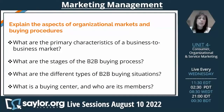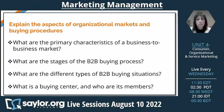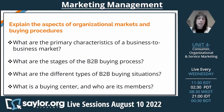Moving on to the second learning outcome for Unit 4, we're going to explain the aspects of organizational markets and buying procedures and look at the characteristics of a B2B — business-to-business — marketplace. We'll specifically be looking at how this varies and differs from a consumer decision-making process, the stages of the B2B buying process, different types of B2B buying situations, and the buying center and who its members are.